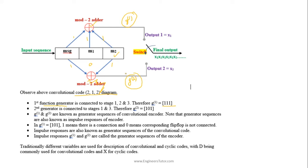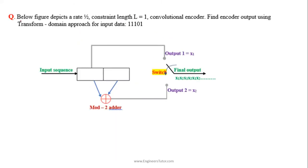These generator sequences are also known as impulse responses of the encoder. Here, 1 means there is a connection and 0 means the corresponding flip-flop is not connected to the generator function — that is, the modulo-2 adder.